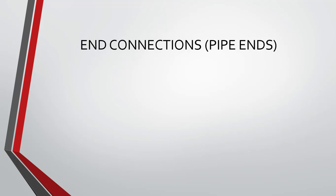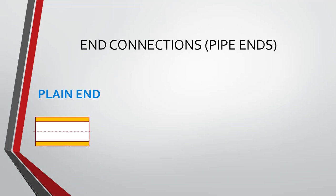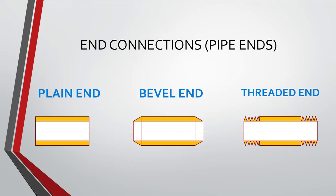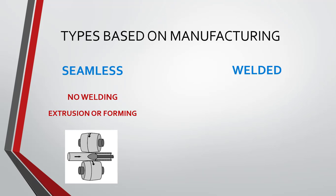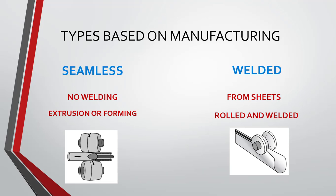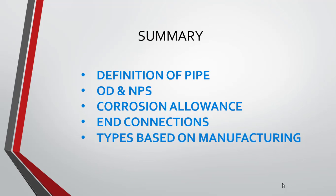Pipes are categorized based on end connections: plain end, bevel end, and threaded end. Each type is used for different purposes and requirements. Pipes are also categorized based on manufacturing methods — seamless and welded. Seamless pipes are pipes without a welding joint, made either through the extrusion process or through the forming method. Welded pipes are produced from sheets that are rolled and then welded together to get the shape of the pipe.